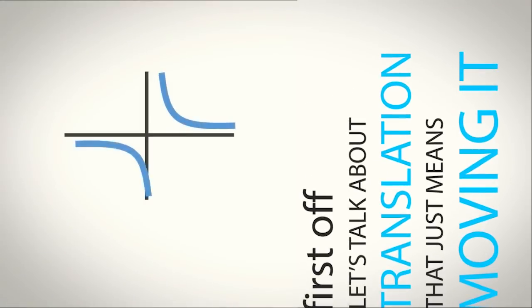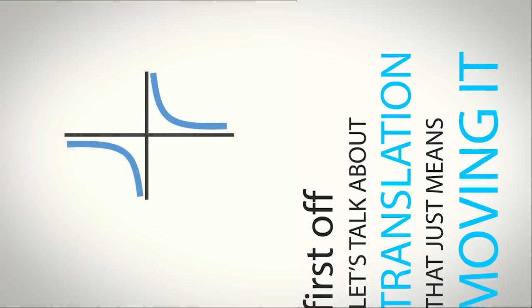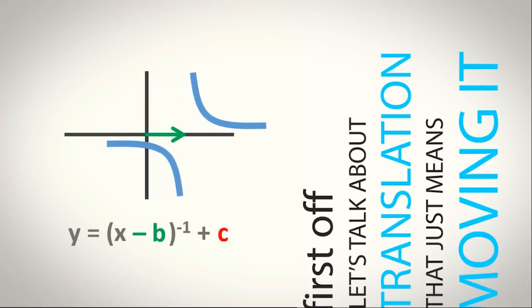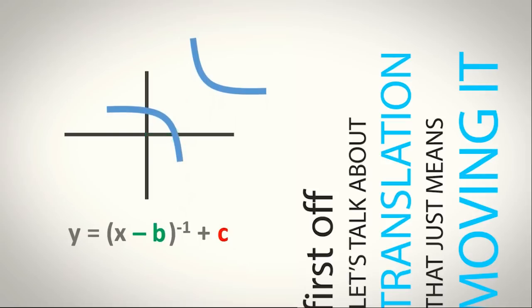Moving it around the graph. If the number's next to x and negative, move right — the opposite direction than you think. But if the number's by itself, then you move it vertically. Can you see how?